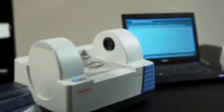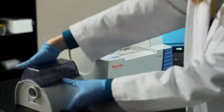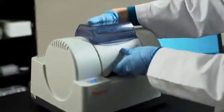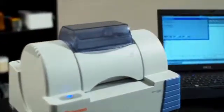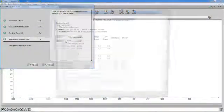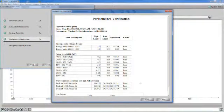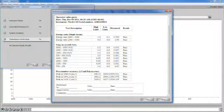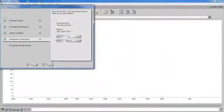Just insert the appropriate sampling accessory. The Nicolet IS-5 instantly recognizes it and automatically configures OMNIC software for analysis. And our exclusive built-in system performance verification assures that measurements are accurate and reliable, sample after sample, and test after test.